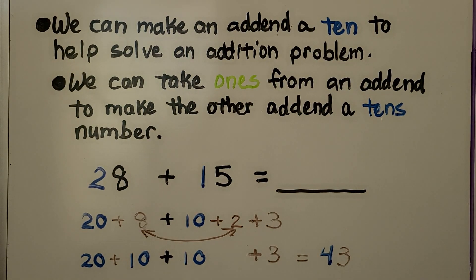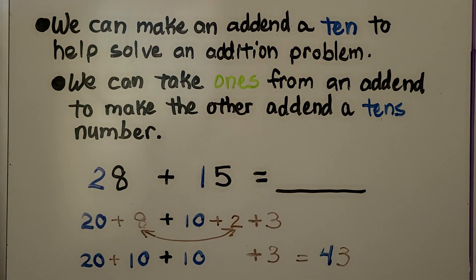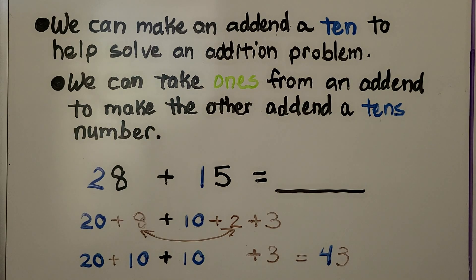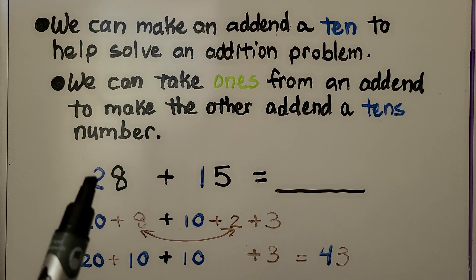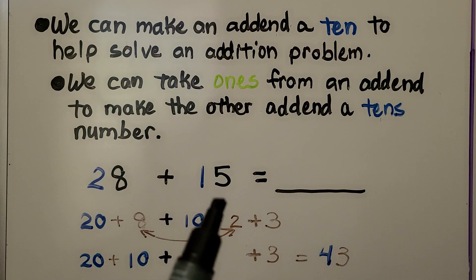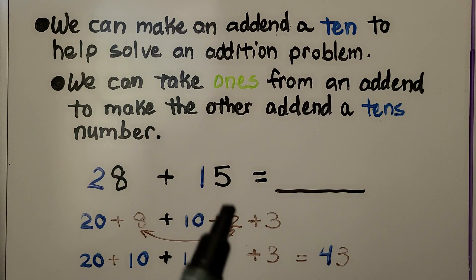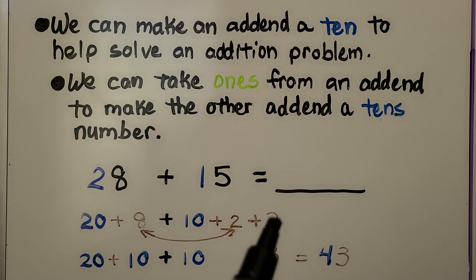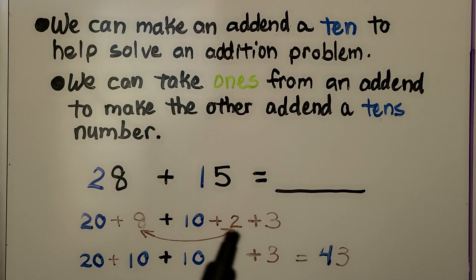We can make an addend a ten to help solve an addition problem. We can take ones from an addend to make the other addend a tens number. We have 28 plus 15. We can break apart the 5 in the 15 into a 2 plus a 3.